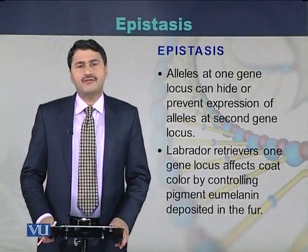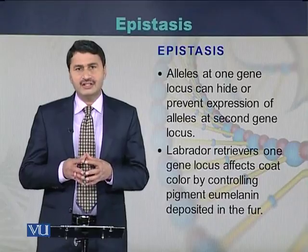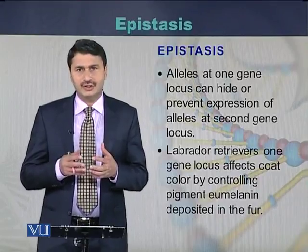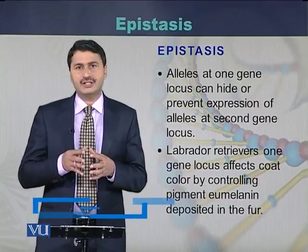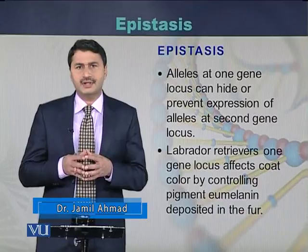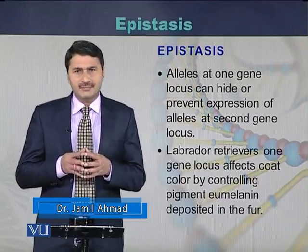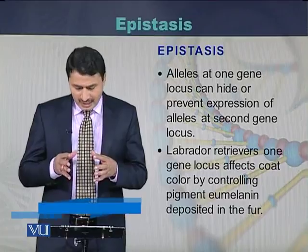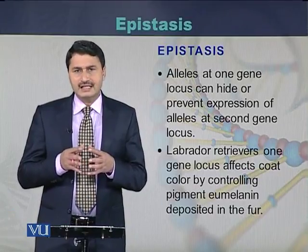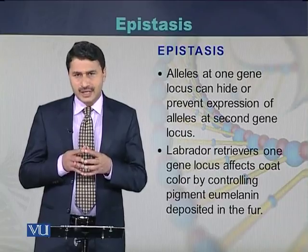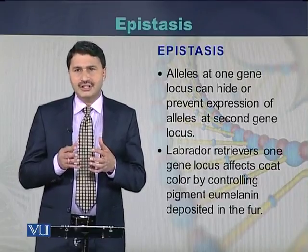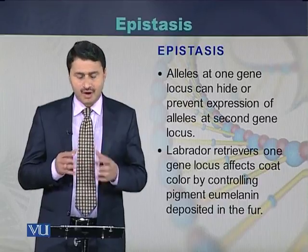Epistasis is a phenomenon where alleles at one gene locus can hide or prevent the expression of alleles present on another gene locus. The best example of epistasis is Labrador dogs. In these dogs, there is a gene that can hide the expression of the coat color if that gene is present in a homozygous form.